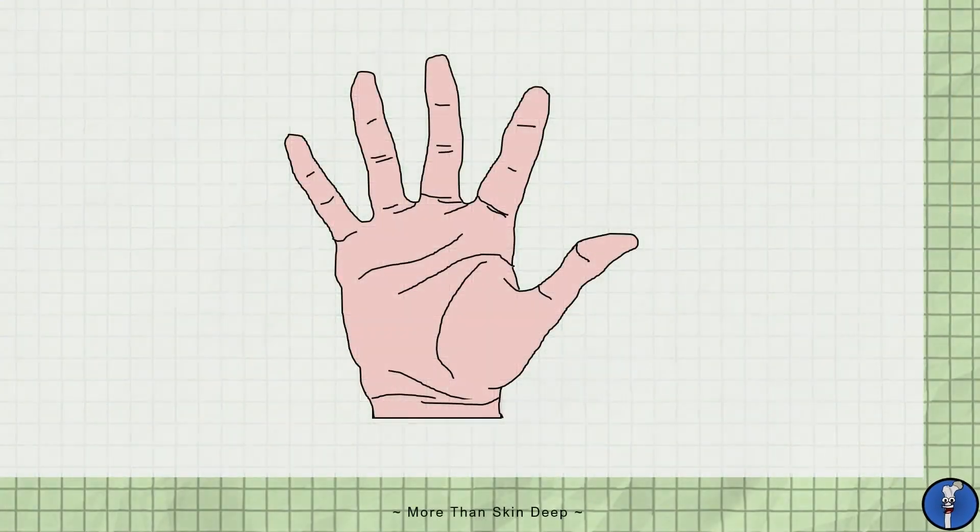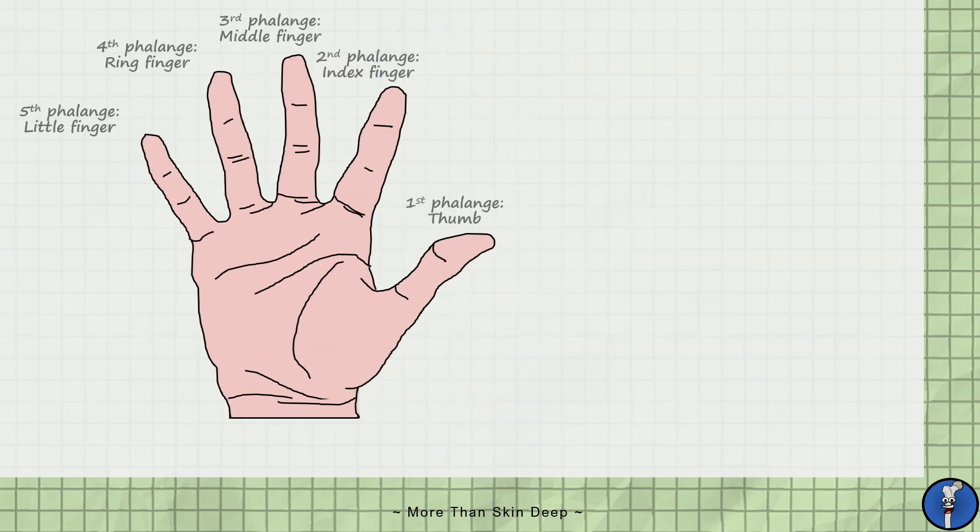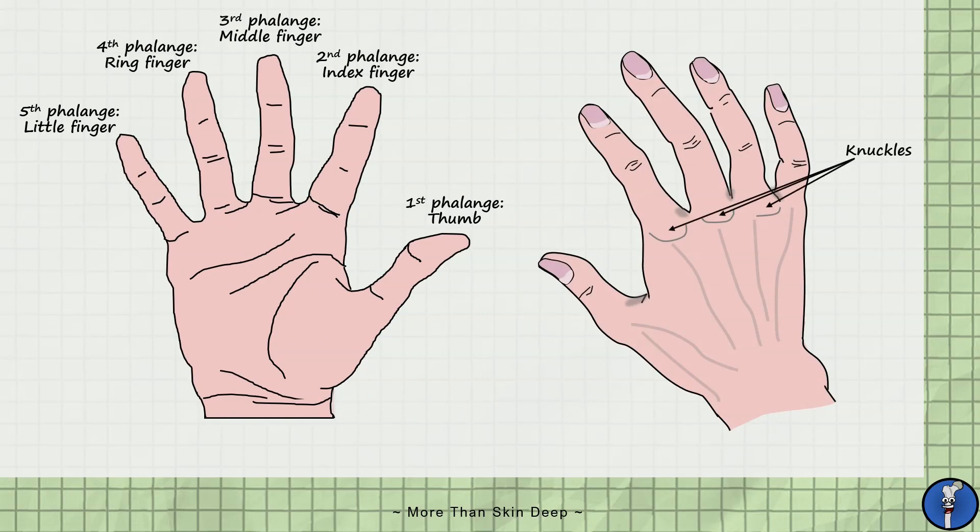Let's start with a quick overview of the surface anatomy of the hand. There are five digits which are numbered from lateral to medial: the thumb, index finger, middle finger, ring finger and little finger. Our main bony landmark on the posterior surface of the hand is the knuckles which are protrusions produced by the metacarpal heads in the metacarpophalangeal joints.